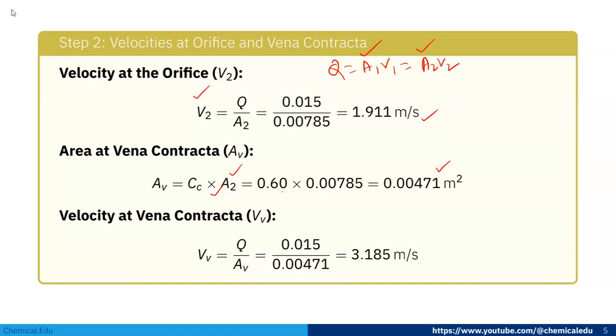Now what will be the velocity at vena contracta? Velocity is Q/Av, or we can write Q = Av × Vv, where Av is the area and Vv is the velocity at vena contracta. So Vv = Q/Av = 0.015/0.00471 = 3.185 m/s.